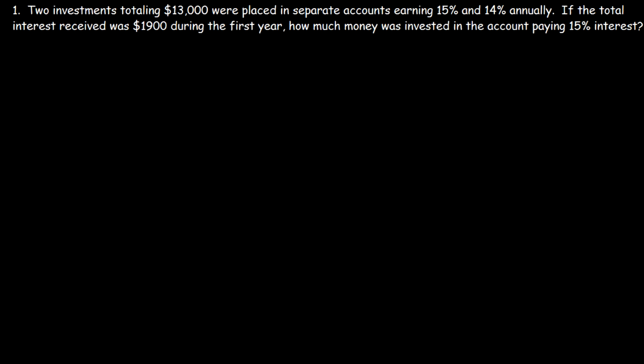Now let's work on some word problems. Two investments totaling $13,000 were placed in separate accounts earning 15 percent and 14 percent annually. If the total interest received was $1,900 during the first year, how much money was invested in the account paying 15 percent interest? Let x be the amount in the first account and y be the amount in the other. So x plus y equals 13,000, and the total interest is 1,900.